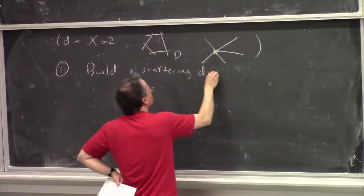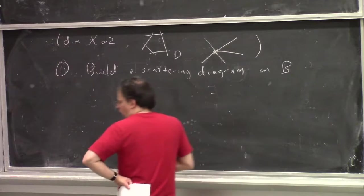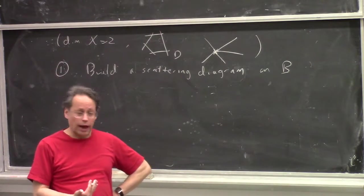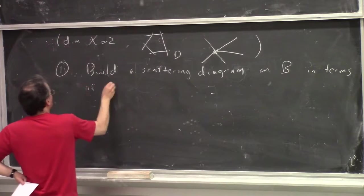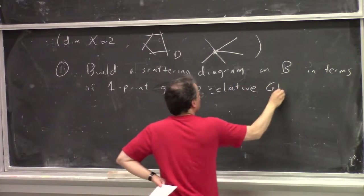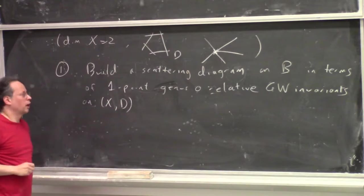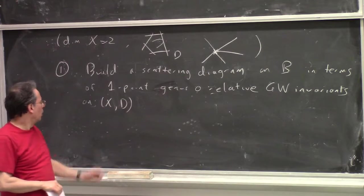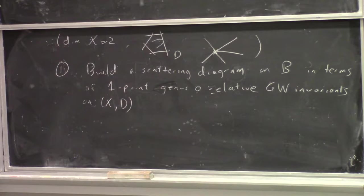So this is sort of a collection of walls on B with functions attached to them, which are going to tell us something about holomorphic disks on X. And really, this is defined in terms of one-point, one-point relative, log Gromov-Witten invariants on the pair X,D.